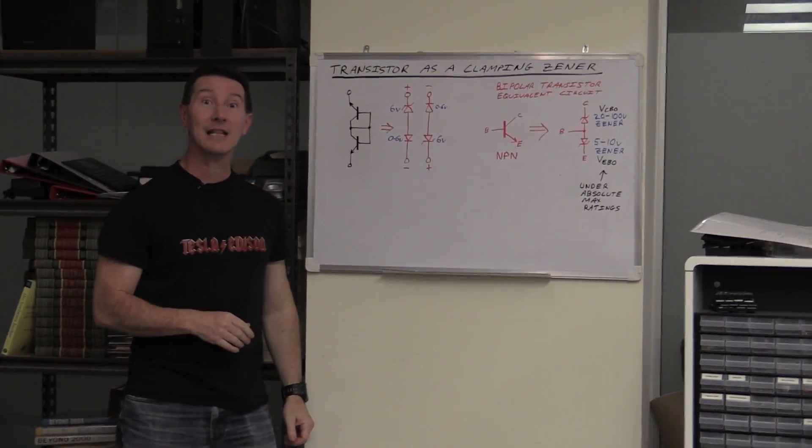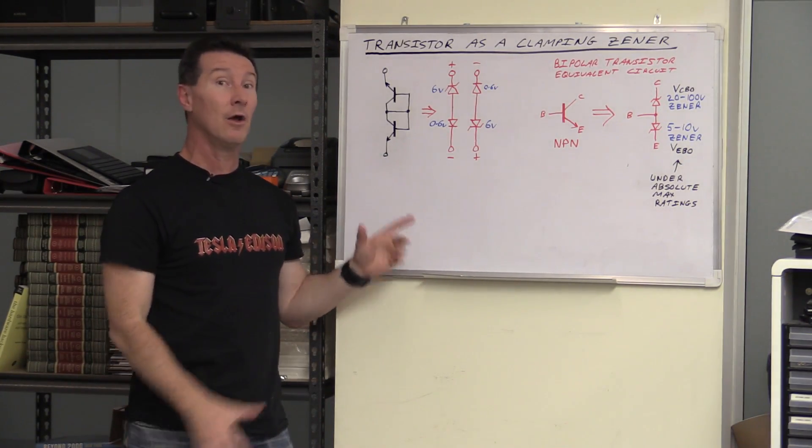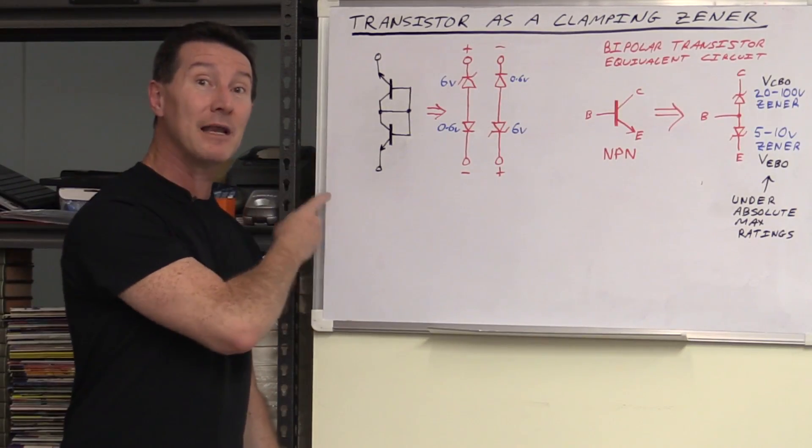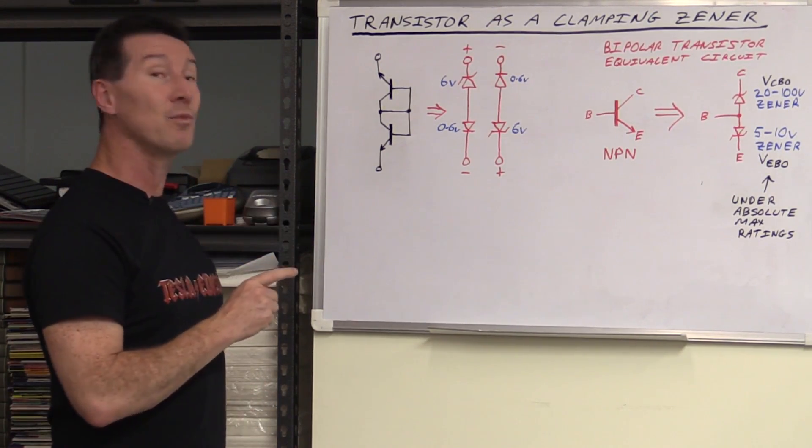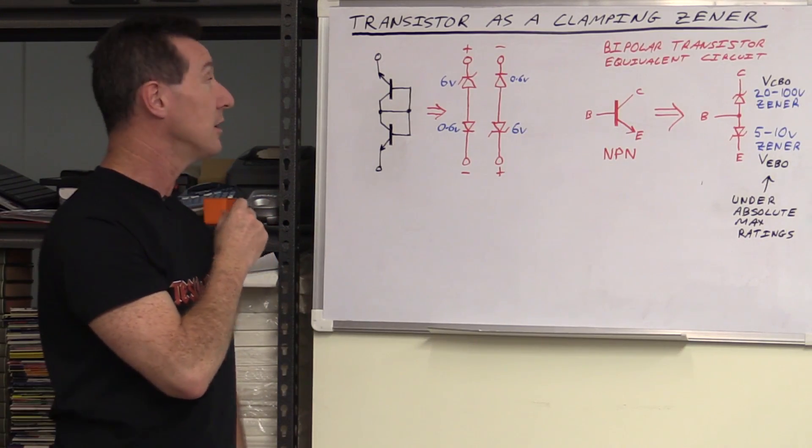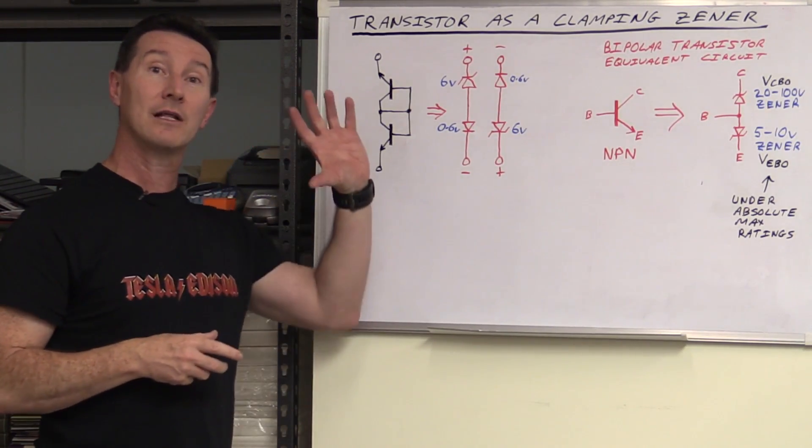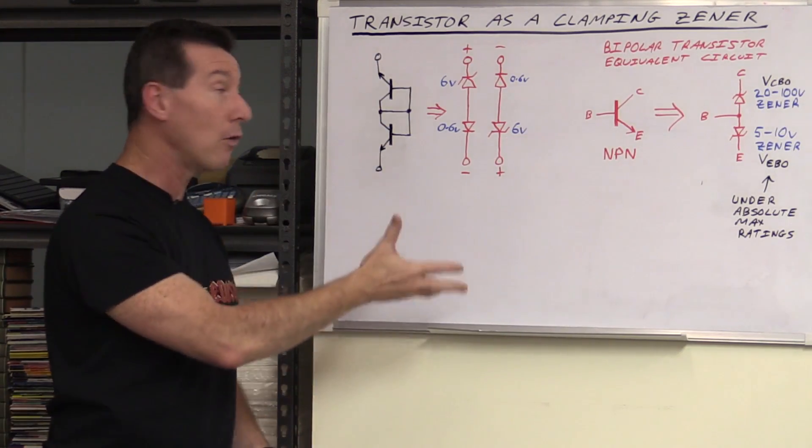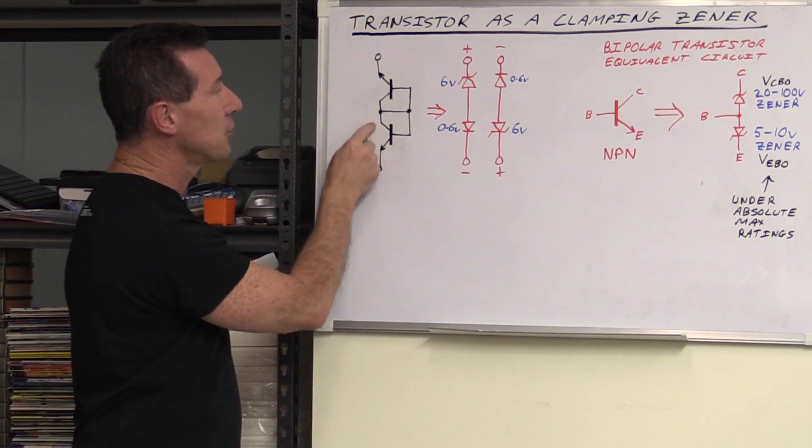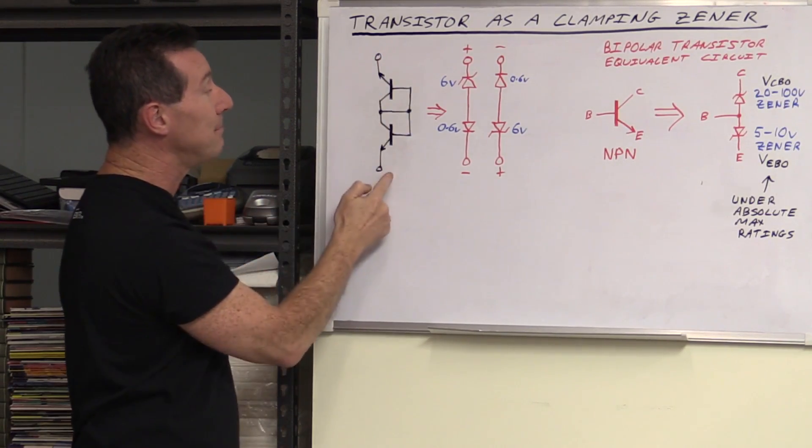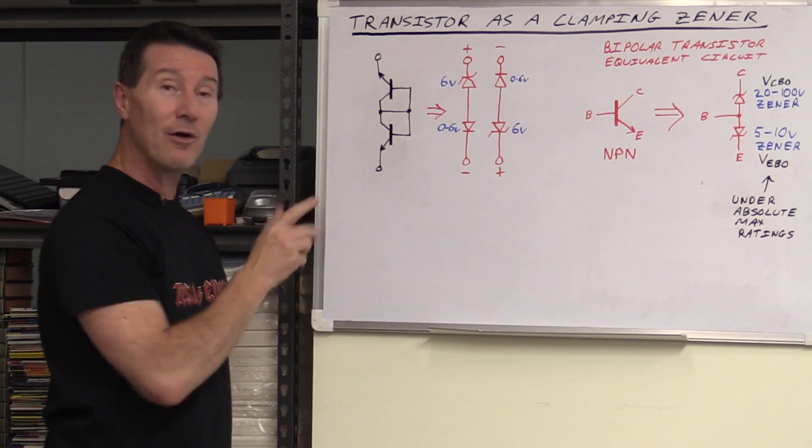Transistor as a clamping Zener. Here's one you may not have seen before. You probably won't find it in any textbook really. And it's a bit of a naughty circuit. We're going to use transistors the way you shouldn't use them. But there's a reason for it and it does actually work from a big name manufacturer. We'll find out.